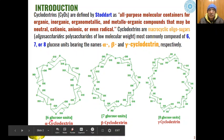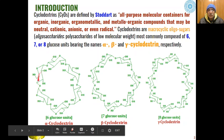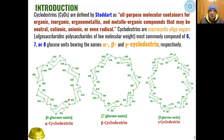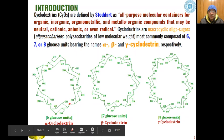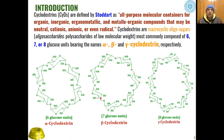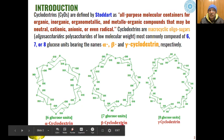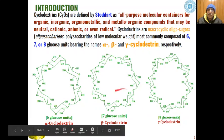If there are six glucose units clubbed together to give this macrocyclic structure, this type of cyclodextrin is called alpha cyclodextrin. If there are seven glucose units, we call that beta cyclodextrin. Similarly, if there are eight glucose units, we call that gamma cyclodextrin.